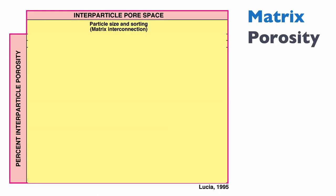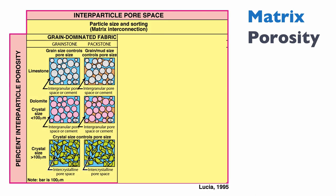Looking at matrix porosity, we have interparticle pore space, and we can look at the different types of texture that we can recognize there. Lucia recognized grain-dominated fabrics where you essentially have mostly grain. That can be grain stones or pack stones in three different categories — limestone that are grain stone and pack stone — and note that the pack stones here are considered mud-lean, with very little mud.